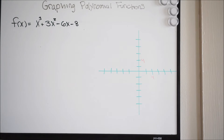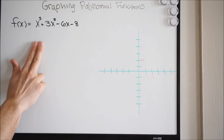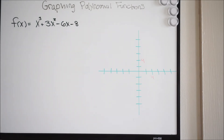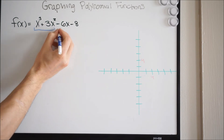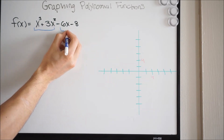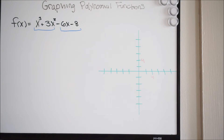Looking at our function, the first step we want to do here is try to get the zeros, because remember the zeros are going to be points on the graph and we can use that for graphing the function. Remember the zeros are where it's crossing the x-axis. So looking at this function, I have four terms here. There's a possibility that I could use factoring by grouping here, so I'm going to go ahead and try that. If we group the first two terms and then the last two terms, we may be able to factor this way.